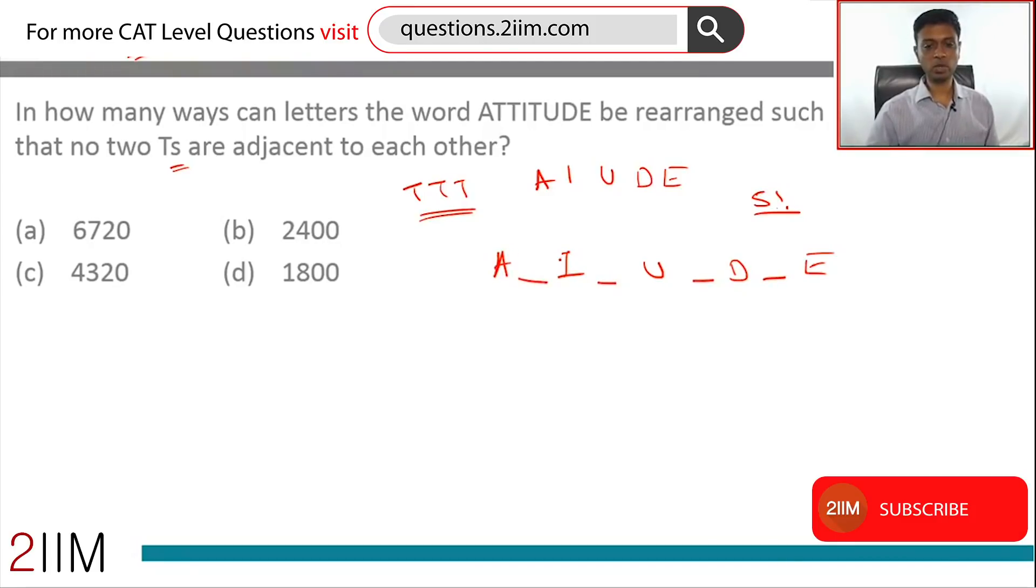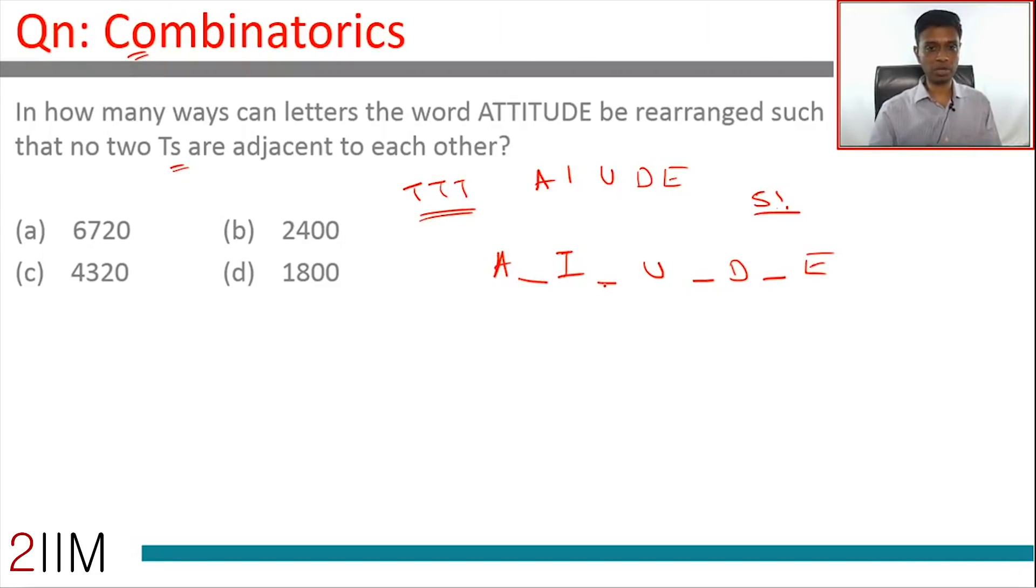...between any two letters, if T takes any of these slots, if all the T's sit anywhere here, no two T's would be adjacent to each other. There are four slots that have been created: between A and I, I and U, U and D, D and E. Any which way we arrange A, I, U, D, E, these four slots would be available.